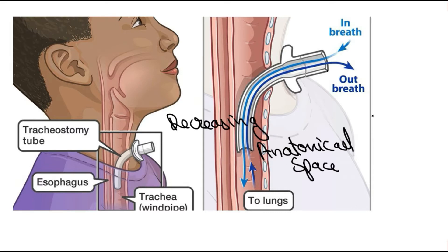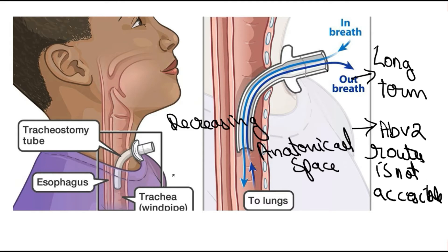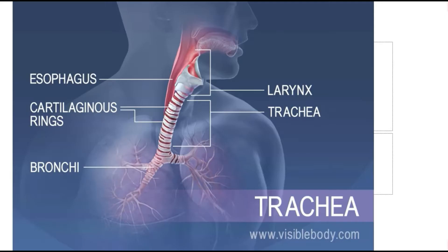Tracheostomy is indicated when there is a long-term requirement for an artificial airway, or when the oral and nasal routes are not accessible. The airway anatomy consists of the larynx, trachea, the vagus nerve behind the trachea, and the bronchi.